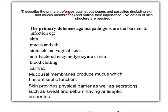The first primary defence involves physical barriers such as the skin, which provides a physical barrier through which microorganisms can't penetrate. Some secretions into the skin, such as sweat and the sebum from the sebaceous glands, have antiseptic properties. Sebum contains fatty acids, for example, which can be poisonous towards bacteria.